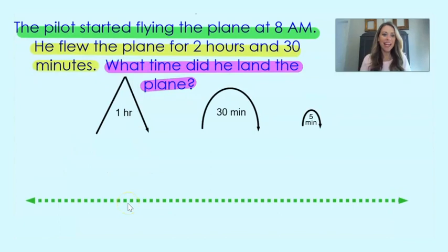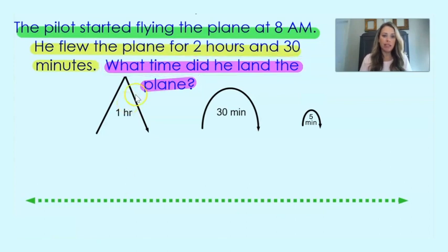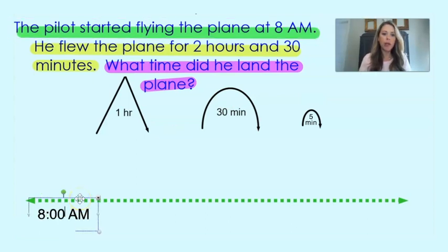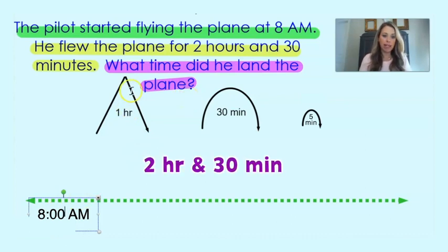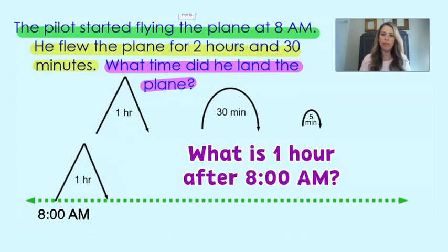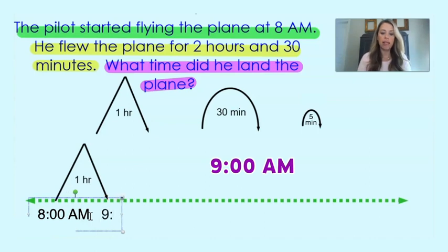Now let's take a look at our second sample problem. We know that we are solving for what time the pilot landed the plane. We are given a start time of the pilot starting to fly the plane at 8am, so we're going to go ahead and record that on our number line. Then I'm going to do a 1-hour jump — 8am plus 1 hour later would be 9am.